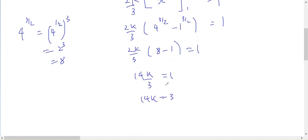14k equals 3, moving the 3 over, k equals 3 on 14, exactly what I was asked to show.